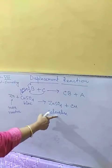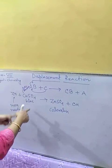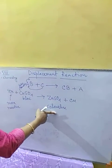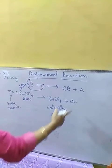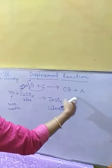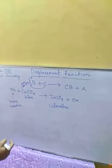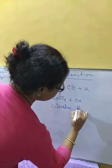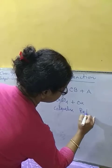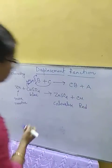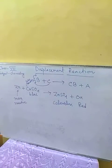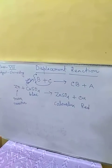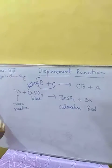Since zinc sulfate is colorless, the blue color will convert to a colorless solution, and we get a red deposit of copper. This red copper deposition is the observable change in this reaction.